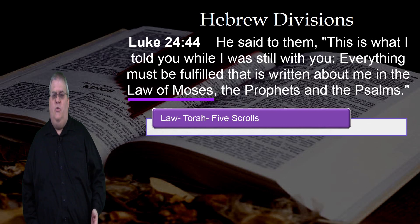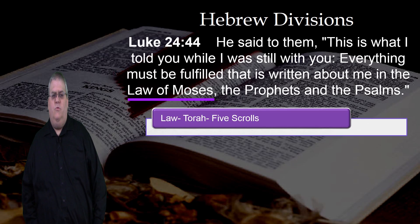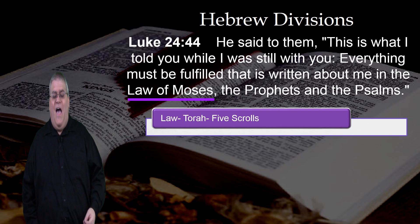Torah means law or instruction. It's also called the Pentateuch, which means five scrolls. It's also called the five books of Moses. These are the first five books of the Old Testament.